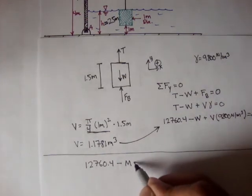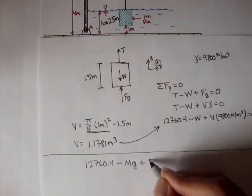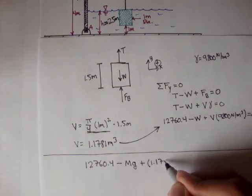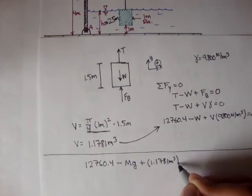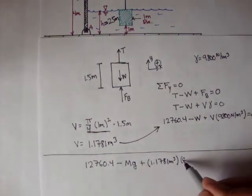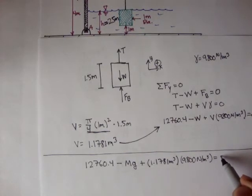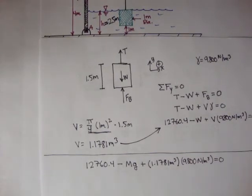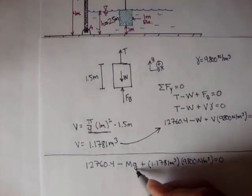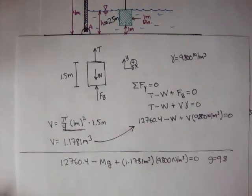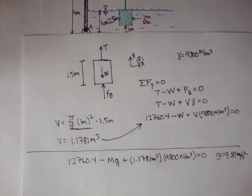So we'll say mass times gravity, plus the volume, which is 1.1781 meters cubed times 9,800 meters cubed is equal to 0. And gravity, we know gravity is equal to 9.81 meters per second squared, that's just gravity.